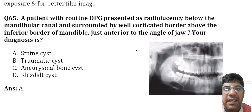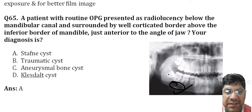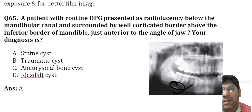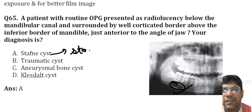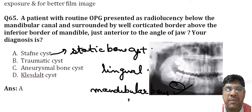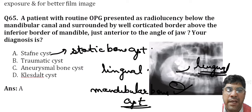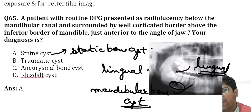A patient with a routine OPG showing a radiolucency below the mandibular canal, surrounded by a well-corticated border above the inferior border of the mandible, just anterior to the angle of the mandible — the diagnosis would be Stafne cyst, also known as static bone cyst or lingual mandibular bone cyst. It is a developmental defect due to inclusion of glandular tissue adjacent to the lingual surface of the mandible, asymptomatic and seen on radiographic examination. The answer would be A.